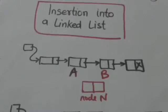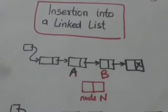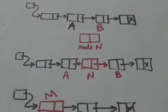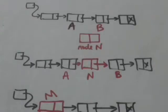Hello friends, welcome back. In this tutorial we will study about insertion into a linked list. Suppose there is a linked list with two successive nodes A and B, and we have inserted a node N in this linked list between nodes A and B. Then after insertion, the next pointer field of node A points to node N, and the next pointer field of node N points to node B.